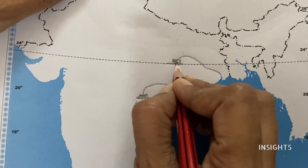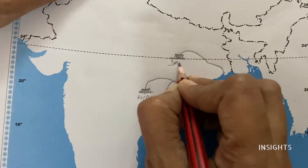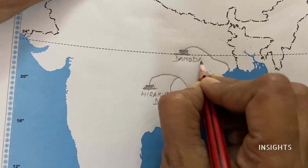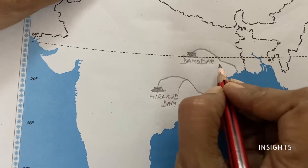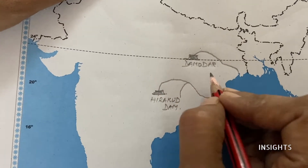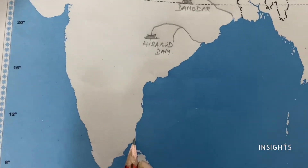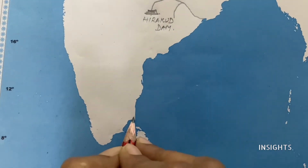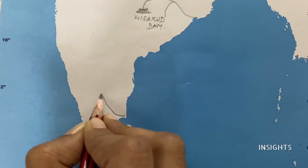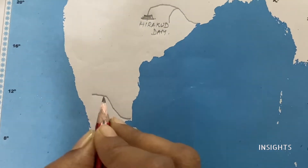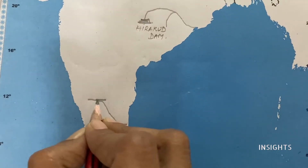The third one is Mettur Dam, which is across river Kaveri in Tamil Nadu. Let's draw the river as usual and mark the dam on the map.